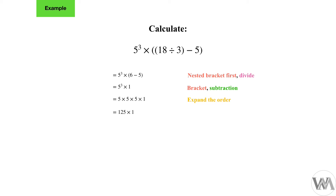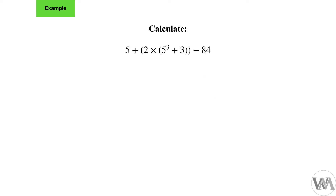Doing the multiplication left to right: 5 times 5 times 5 times 1 equals 125. The third example is: 5 plus bracket 2 times nested bracket 5 to the power of 3 plus 3, close the nested bracket, close the bracket, minus 84.